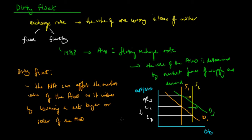Now that we've learned the concept of the dirty float and how the RBA can actually manipulate the exchange rate by becoming either a net buyer or a seller of the Australian dollar, we can see how the RBA can use this as a demand management policy in Australia.